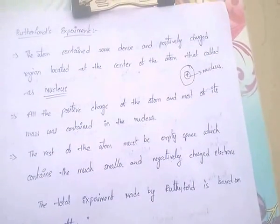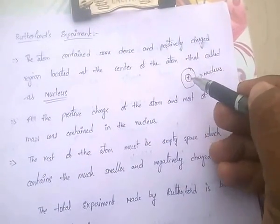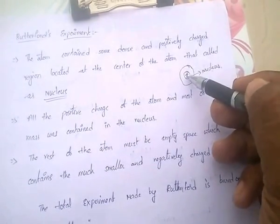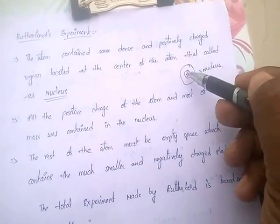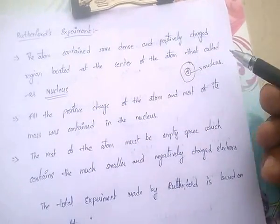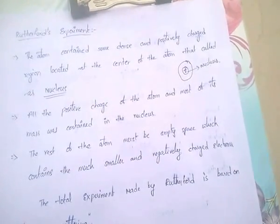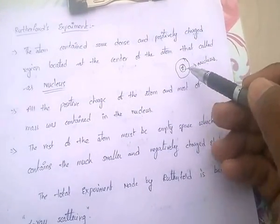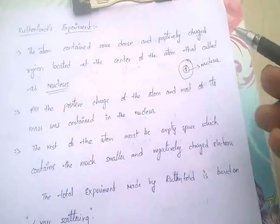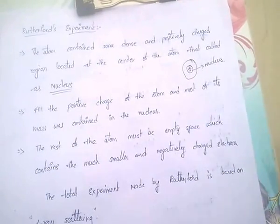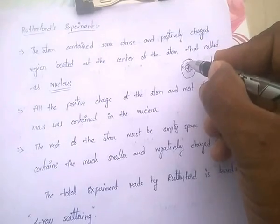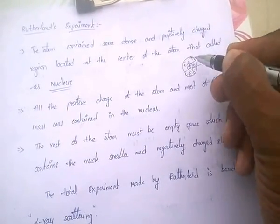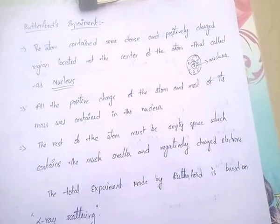All the positive charge of the atom and most of its mass are contained in the nucleus. The rest of the atom must be empty space, which contains small negatively charged particles.